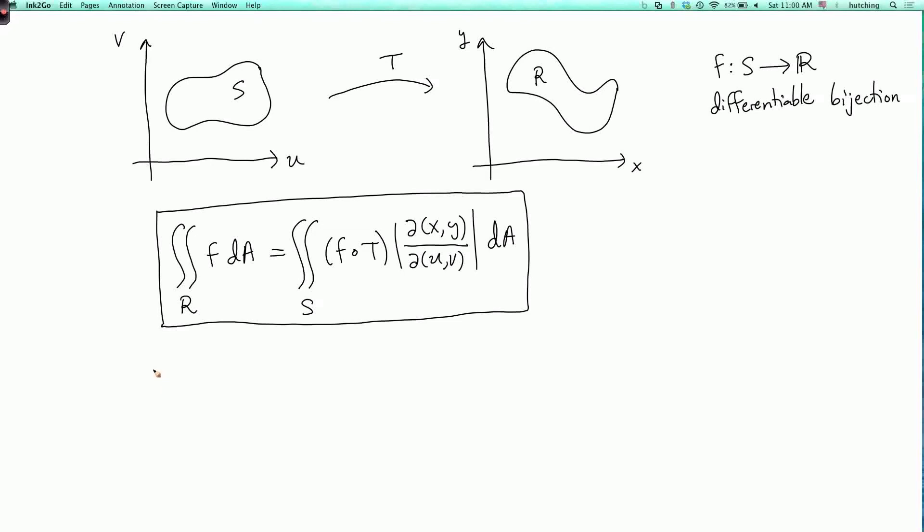Let's do an example to see how the change of variables formula works. Remember the formula says that the double integral over R of F with respect to area is the double integral over S of F composed with the transformation T times the absolute value of the Jacobian with respect to area, where T is a transformation from the region S in the UV plane to the region R in the XY plane, which is a differentiable bijection between these two regions.